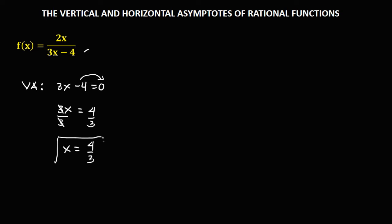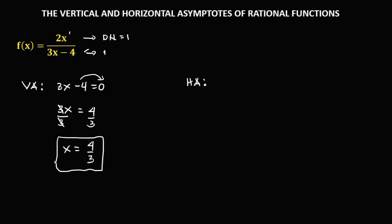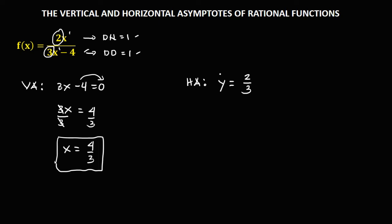So x is equal to 4 over 3, and this is the vertical asymptote. To find the horizontal asymptote, we just need to check the degree of the numerator and the degree of the denominator. Since the degree of the numerator is equal to 1 and the degree of the denominator is also equal to 1, the horizontal asymptote is the ratio of their leading coefficients. Therefore, y is equal to 2 over 3.